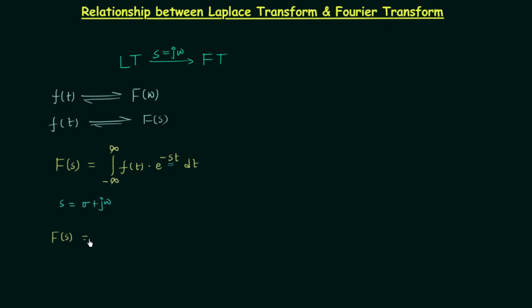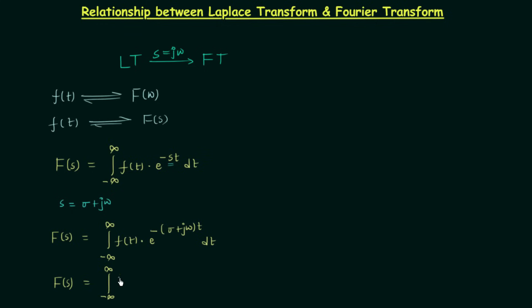So F(s) is equal to the integration from minus infinity to infinity of f(t) multiplied by e^(−(σ + jω)t) dt. We have a single exponential with power −(σ + jω)t. We can write it as two different exponentials multiplied together: e^(−σt) and e^(−jωt) dt.